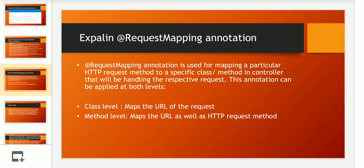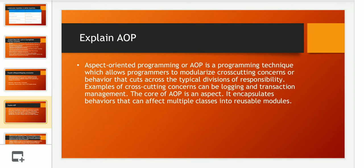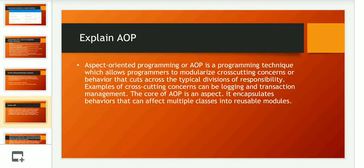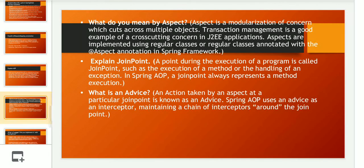The next question was: explain AOP — Aspect Oriented Programming. AOP is a programming technique that allows programmers to modularize cross-cutting concerns, or behavior that cuts across the typical divisions of responsibility. Examples of cross-cutting concerns are logging and transaction management. The core of AOP is an aspect, which encapsulates behaviors that can affect multiple classes into reusable modules.